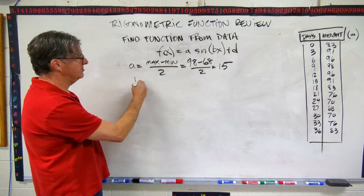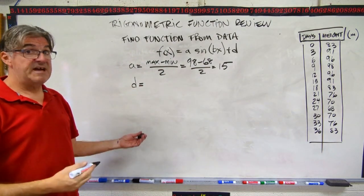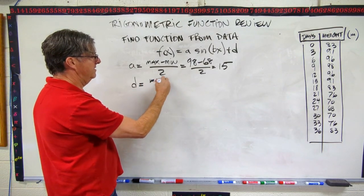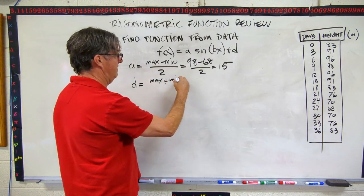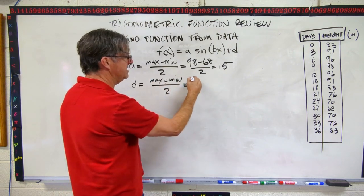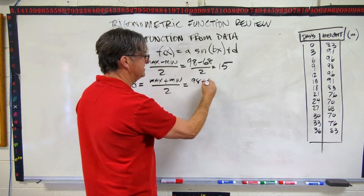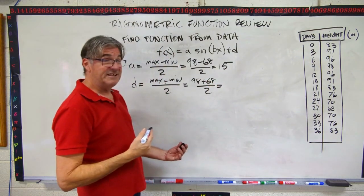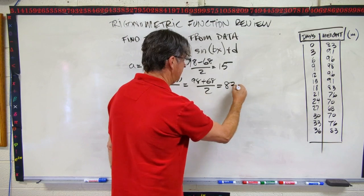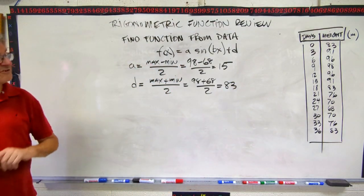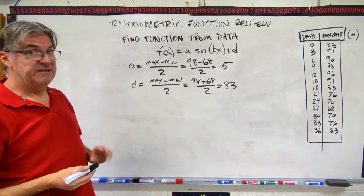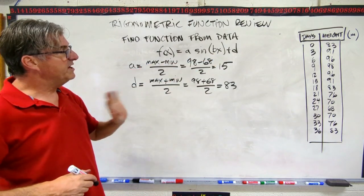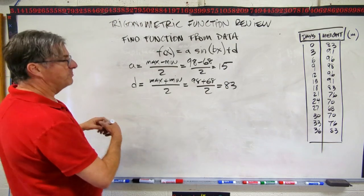Now our D. Let's do the D first because that's a very similar calculation. That's just max plus min over 2. So max plus min over 2. And so that's going to be 98 plus 68 over 2. And I get 83 with that right there. Okay. So finally, we need our period, right? Or we need our period multiplier. We need our B.